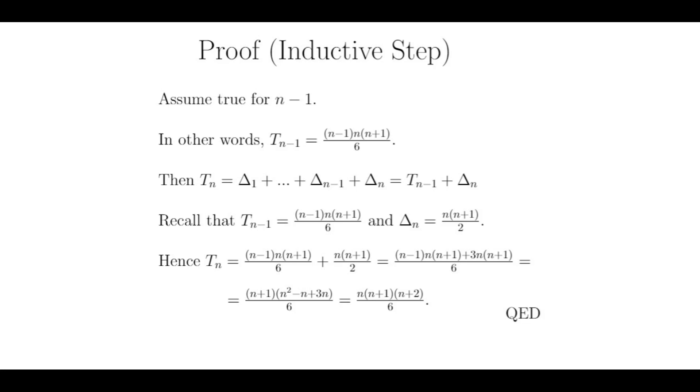Creating a common denominator, combining terms, multiplying through, and simplifying yields t sub n equals n times n plus 1 times n plus 2 all divided by 6, which is what we wanted to show in the first place. This completes the proof, and the theorem is proved by Principle of Mathematical Induction, or PMI for short.